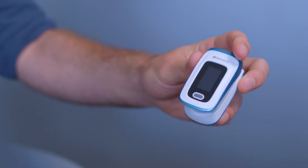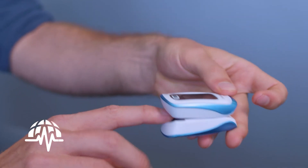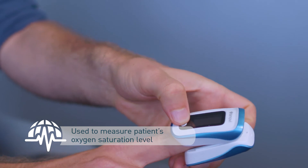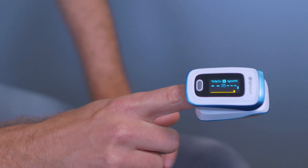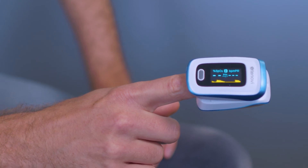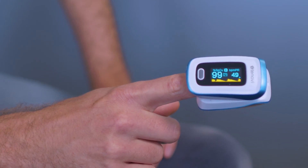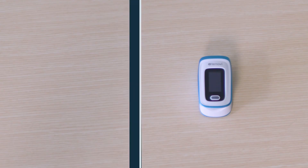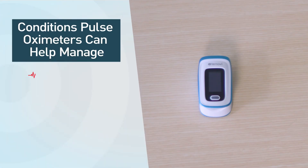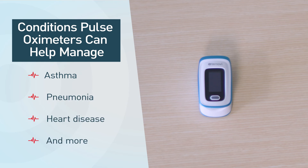And lastly, let's look at a pulse ox. A pulse ox is used to measure a patient's oxygen saturation level, or their oxygen level in their blood. The device can instantly detect even the slightest changes in how oxygen is being delivered throughout the body. Pulse ox can be used to help manage any condition that can affect blood oxygen levels, including asthma, pneumonia, heart disease, and more. Pulse oxes are great RPM devices to keep your patients healthy and out of the hospital.